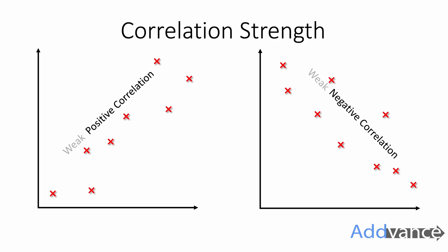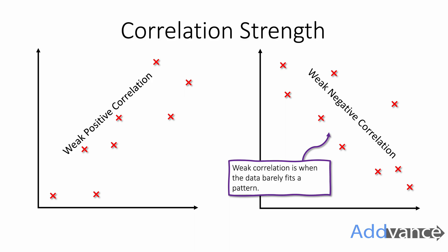And a weak correlation is where the data barely fits the pattern. It's a bit more spread out. There is still some correlation in the data.